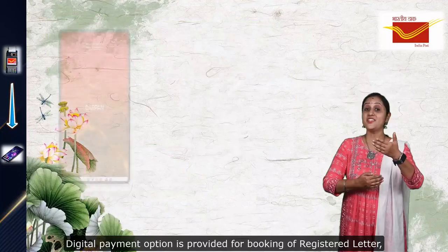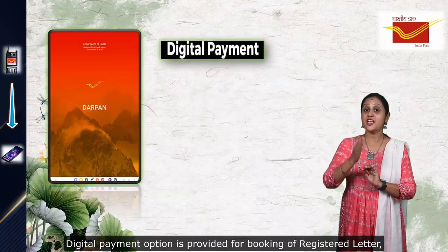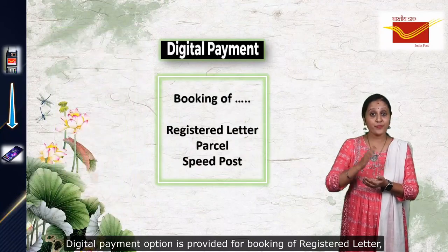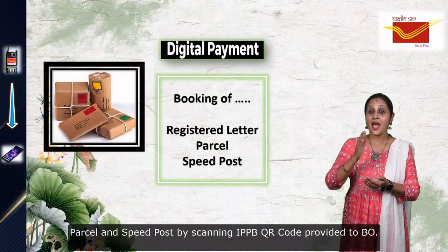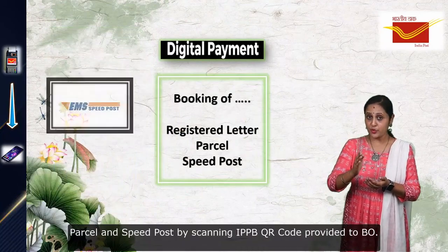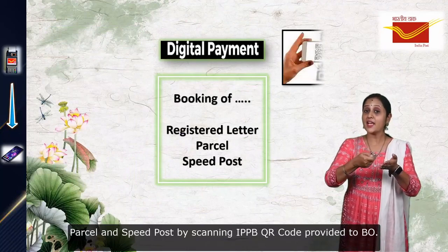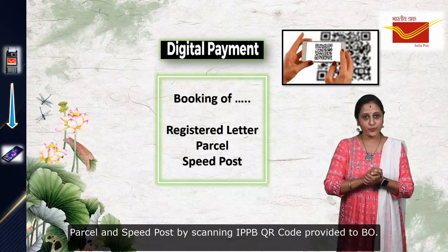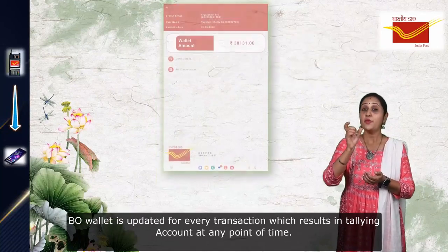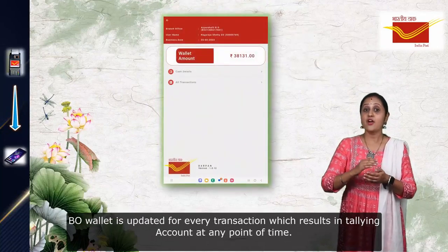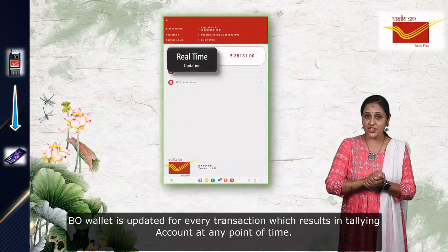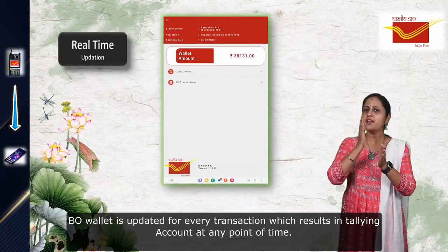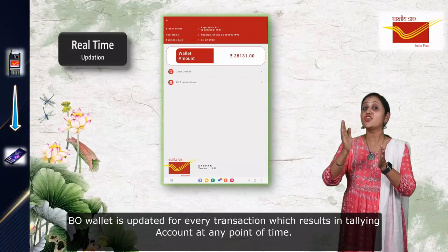Digital payment option is provided for booking of registered letters, parcels, and speed posts by scanning the IPPB QR code provided to the VO. The VO balance is updated for every transaction, which results in tracking the account at any point of time.